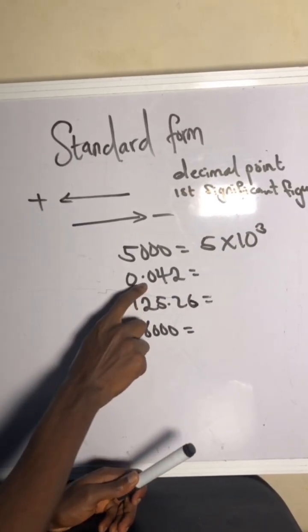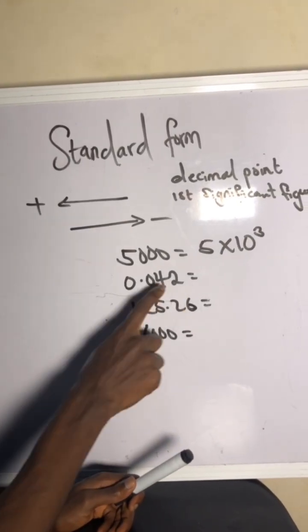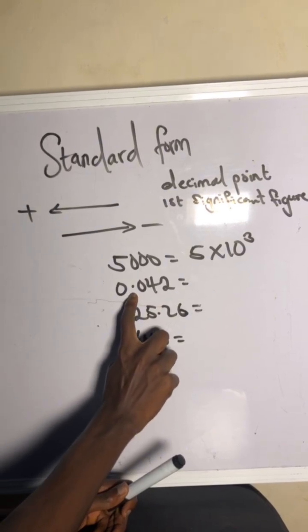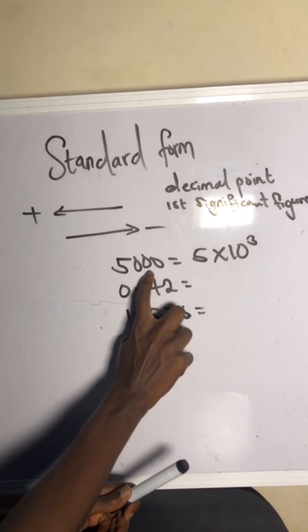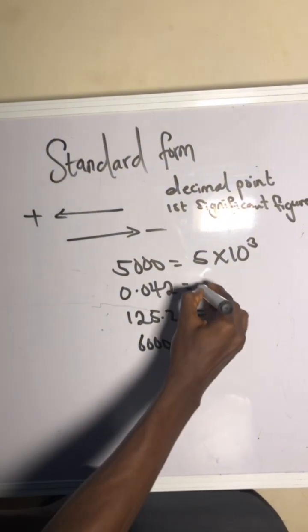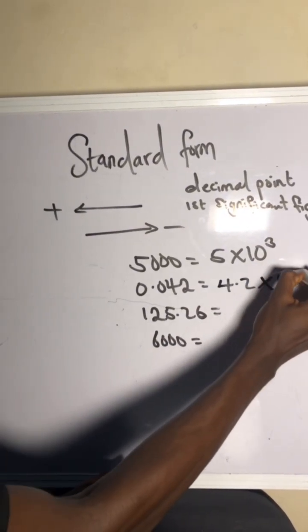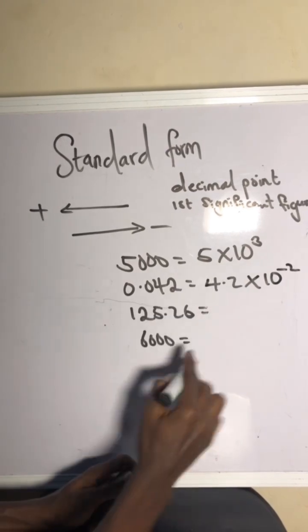Alright, listen up. This is my decimal point. My first significant figure is 4. So let's drive the point to the back of the first significant figure. You go 1 and then 2, you stop here. Yeah, that'll be 4.2. That's where the point is now. Times 10 to the power of negative 2 because I move towards the right.